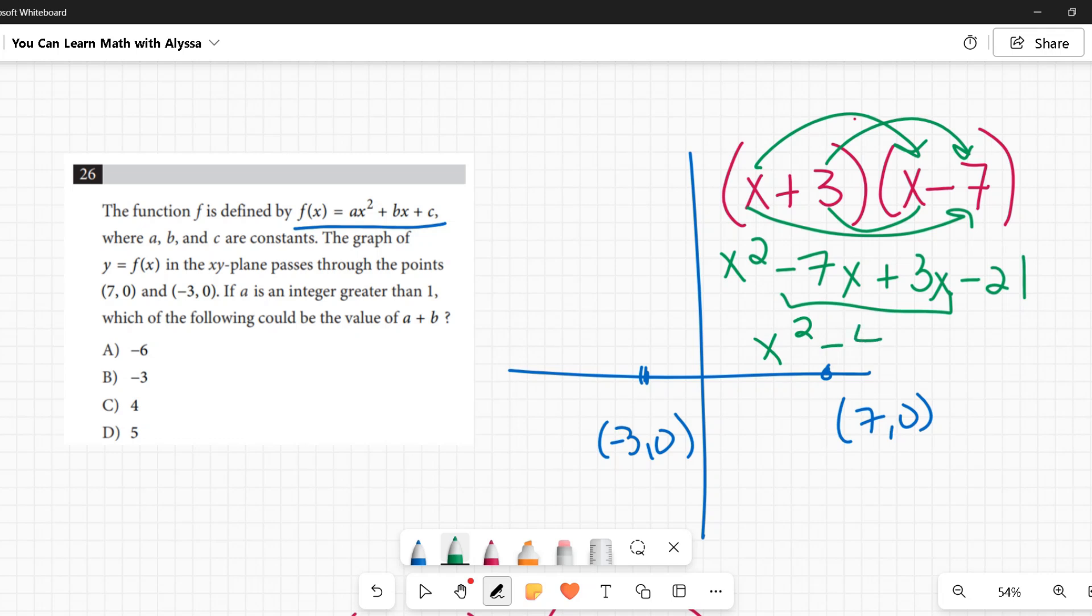And I get x² - 4x - 21, and that, my friends, is a function that absolutely would work for this.